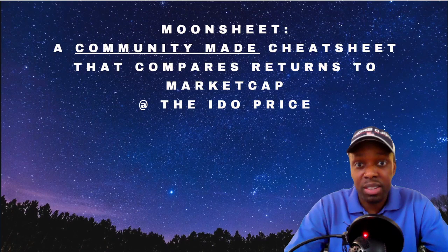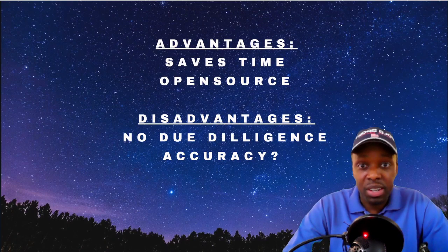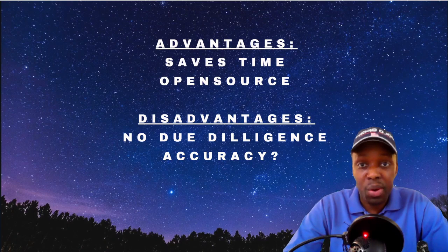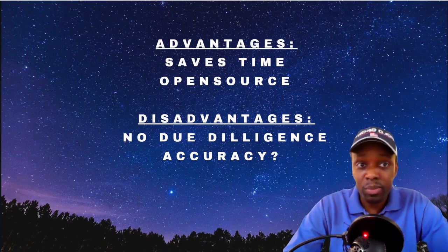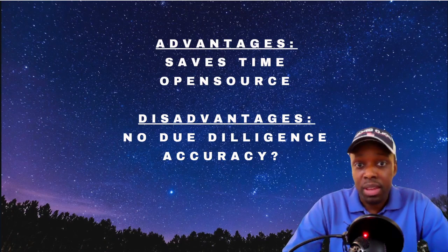The advantages of a moon sheet: first, it saves time — you don't have to go reading white papers to find the circulating supply. The circulating supply on CoinGecko and CoinMarketCap is usually not accurate in the first couple months, even the first year. Second, it's open source, so you can find it through other people in the community.